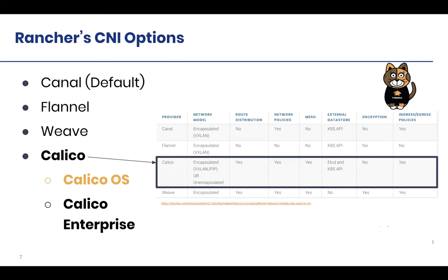Of course we also have encryption options, as well as ingress and egress policies. With the latest launch of 3.15 — which we just launched this week — we actually do have encryption using WireGuard in the background as a method of encrypting pod-to-pod networking. We need to address that in Rancher's docs; I'll probably raise the PR after this discussion since 3.15 does have that support.